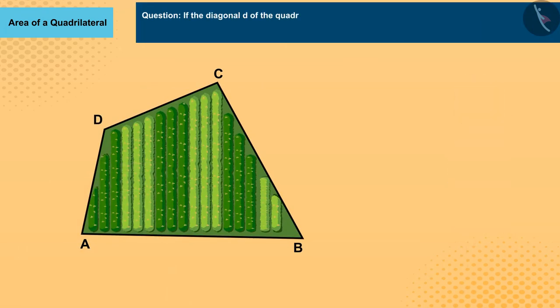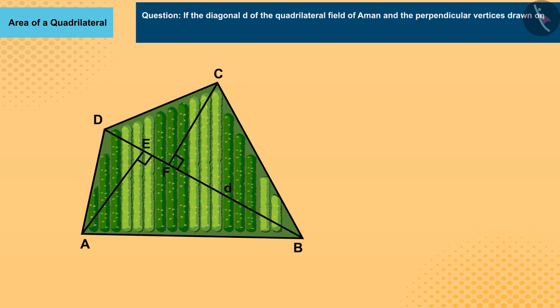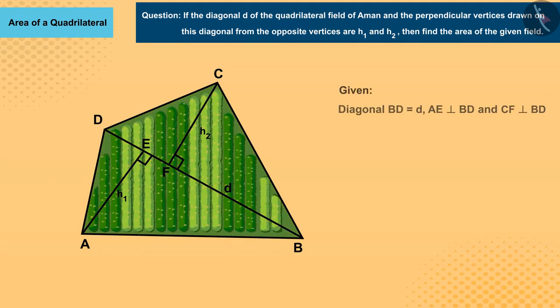If the diagonal d of that field and the perpendicular vertices drawn on this diagonal from the remaining facing vertices are h₁ and h₂, can you help Aman find the area of that field? Pause the video to try yourself and then match your answer.